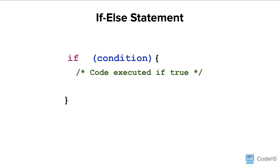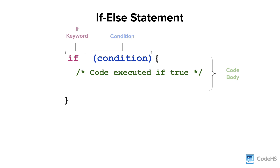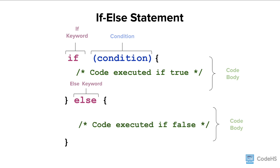We can also include an else portion to our if statement if we want to execute some code when the condition is false. To do this, we write the if statement just like before: the if keyword, the condition in parentheses, followed by the curly braces, and then the code body, which is the code that executes if the condition is true. Then, to add code to be executed when the condition is false, we include an else statement — the else keyword, another set of curly braces, and another code body. This code body executes only when the condition is false.